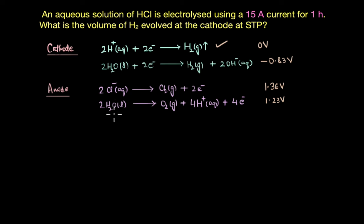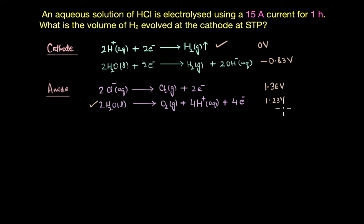Looking at these reduction potentials, the oxidation of water would theoretically be preferred over chlorine because it has a lower value of electrode potential. However, in reality it is the oxidation of chloride ions that is preferred at the anode.